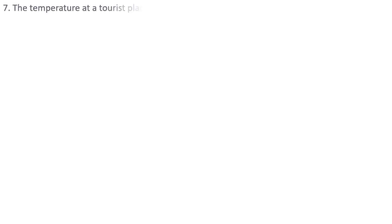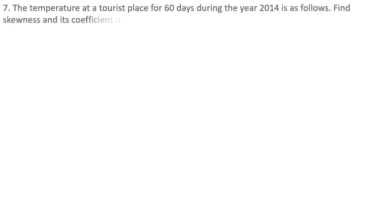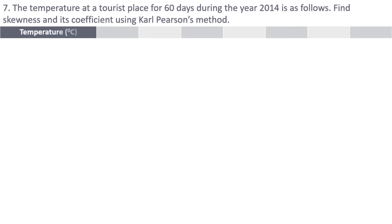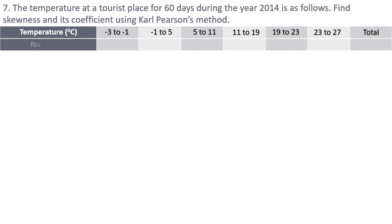Question 7: The temperature at a tourist place for 60 days during the year 2014 is as follows. We have to find skewness and its coefficient using Carl Pearson's method. The temperature is in degrees Celsius: −3 to −1, −1 to 5, 5 to 11, 11 to 19, 19 to 23, 23 to 27. Looking at the data, the class lengths are all different, so we cannot calculate mode using simple methods — once again we will calculate median.